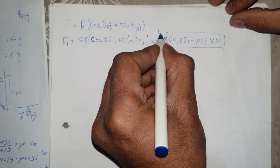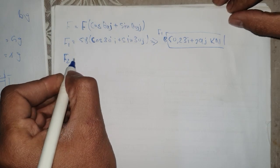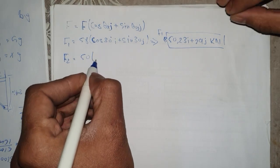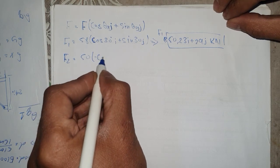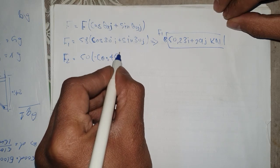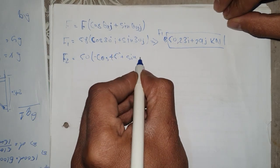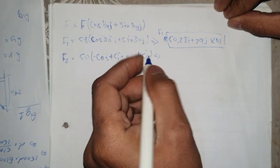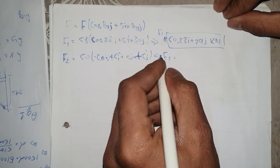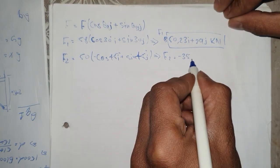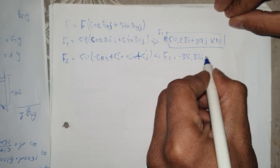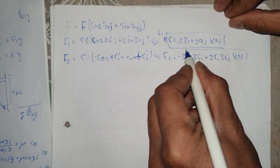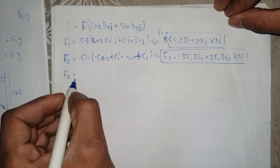For F2, the force is 50 kilonewtons with a negative cosine component: 50 times (negative cosine 45° i plus sine 45° j), giving F2 equal to minus 35.36i plus 35.36j kilonewtons.